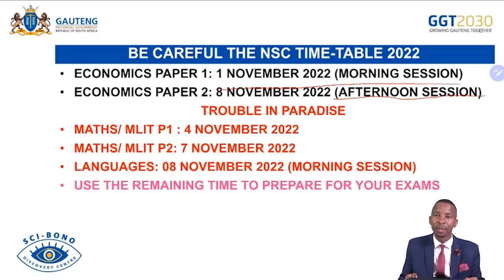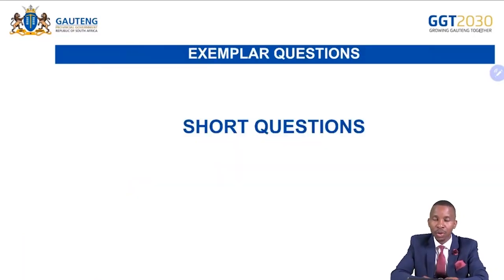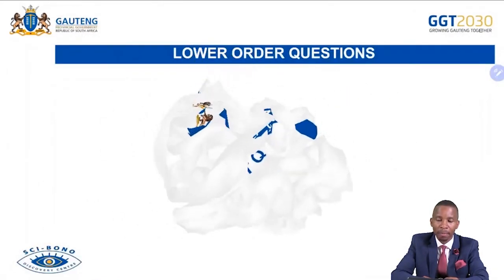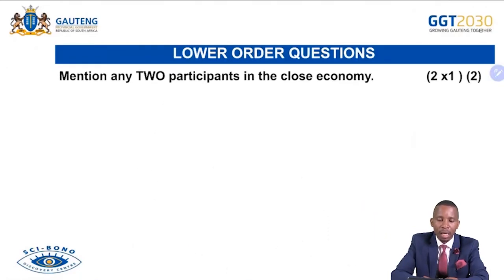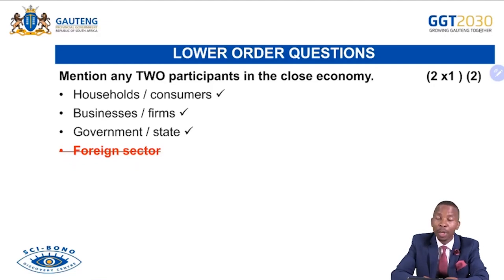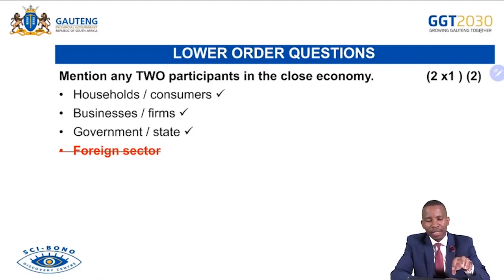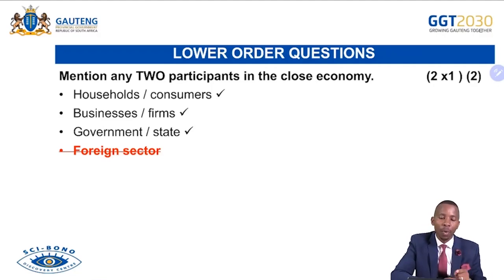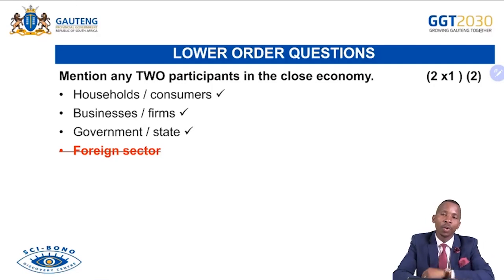Now for example questions — this is more like a revision. The first portion was guidelines; now this is lower order. 'Mention any two participants in the closed economy': households or consumers, businesses or firms, government or state. If you say foreign sector, that is wrong because this is a closed economy, not the open economy. We can develop this to middle order: 'Discuss the role of household in the economy.'